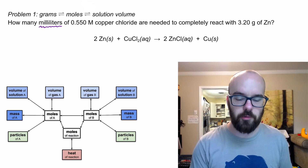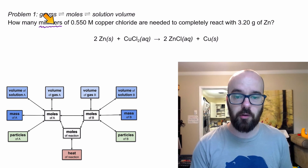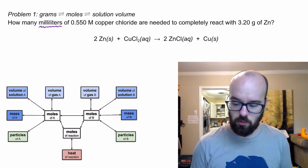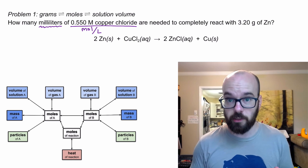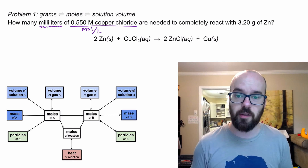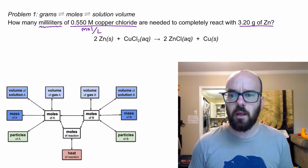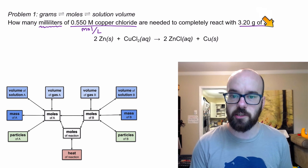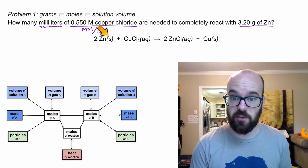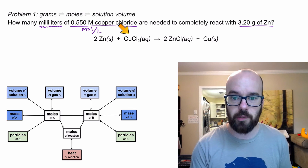So milliliters — I'm trying to find a solution volume. I have a molarity of copper chloride; that molarity is going to be a conversion factor. Remember, molarity is moles per liter — it's a way of converting between moles and liters. I need to completely react with 3.20 grams of zinc, so that's my starting point. I've got a certain mass of zinc and I want to know how much copper chloride I need to completely react with it.